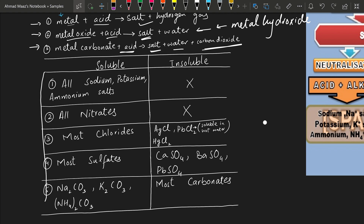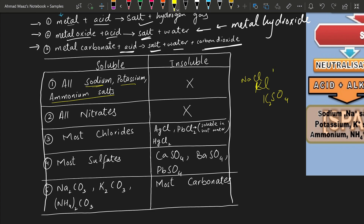Here is the solubility table you need to memorize. First: all sodium, potassium, and ammonium salts are soluble in water — sodium chloride, potassium chloride, potassium sulfate, ammonium nitrate — there are no exceptions. No sodium, potassium, or ammonium salt is insoluble. Second: all nitrates are soluble in water — magnesium nitrate, calcium nitrate, potassium nitrate, lead nitrate, barium nitrate — with no exceptions.